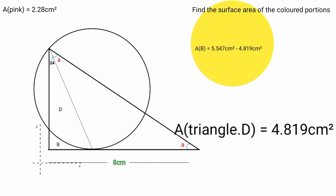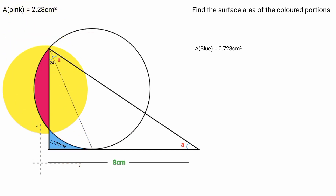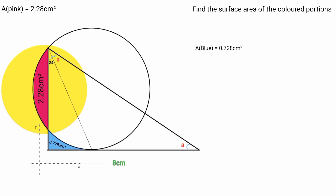Substituting: area of B equals 6.006 minus 0.459 minus 4.819, which gives approximately 0.728 cm squared. So the surface area of the blue colored portion is approximately 0.728 cm squared, and earlier we found the pink colored portion to be 2.28 cm squared.